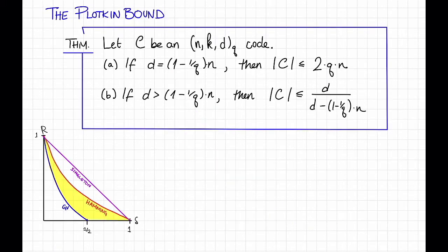So here's what the Plotkin bound says. Let c be an NKDQ code, then the following two things are true. First, if the distance d of c is equal to 1 minus 1 over q times N, so if q is equal to 2, that says the distance is right here, at one half, then the size of the code is at most 2 times q times N.